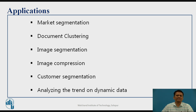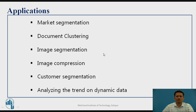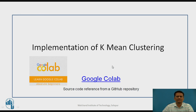There are various applications of K-means clustering: market segmentation, document clustering, image segmentation, and grouping images. For example, in Google Photos, photos are automatically grouped — at the back end, these types of clustering algorithms are working. It is also used in customer segmentation and analyzing trends in dynamic data.